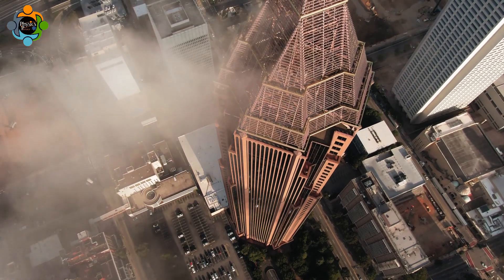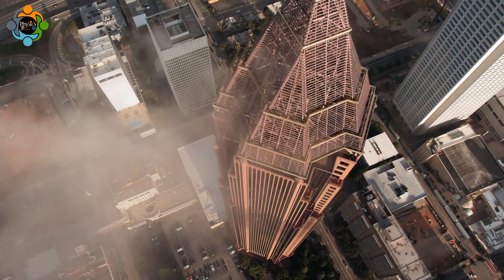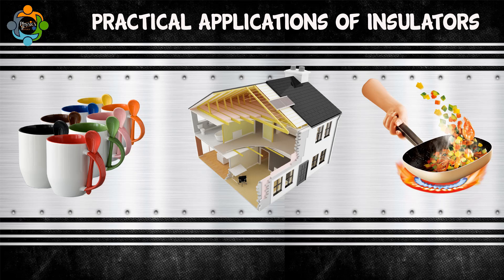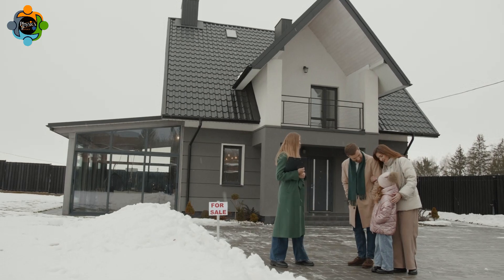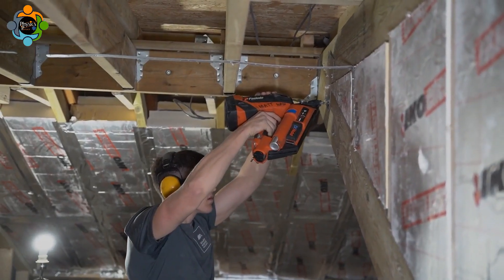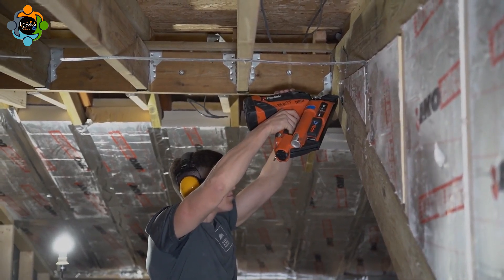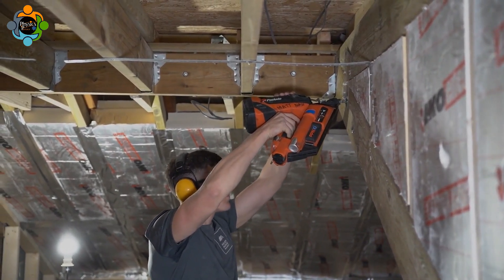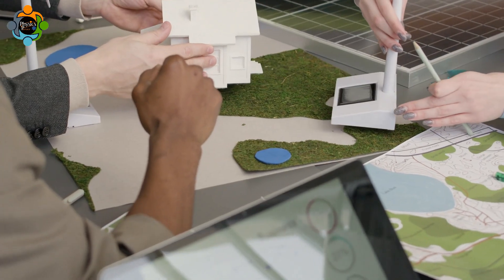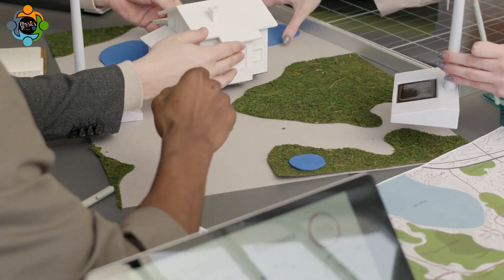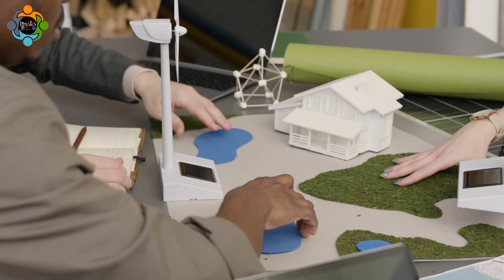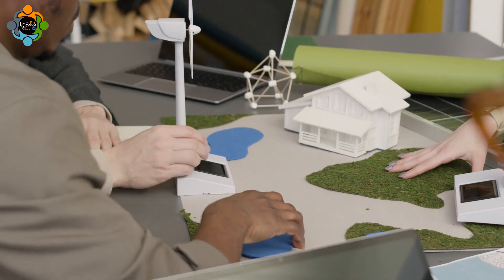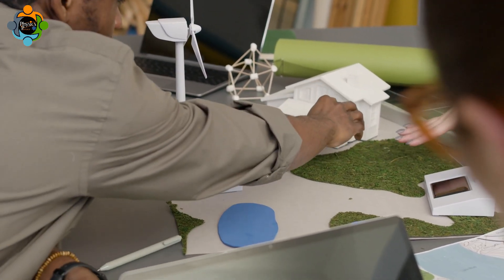Lightning rods thus prevent fires and electrical damage. Now let's shift our focus to insulators. One common application is home insulation, which is crucial in maintaining comfortable indoor temperatures — trapping heat in winter and keeping it out during summer. Insulating materials like fiberglass, foam, and cellulose are specifically designed to reduce heat transfer, making our homes more energy efficient and reducing heating and cooling bills.